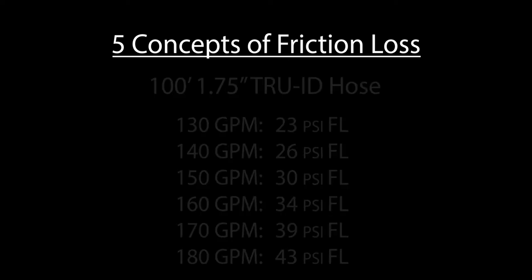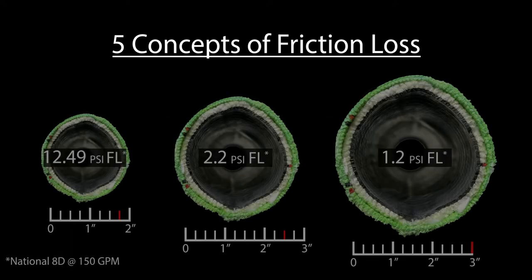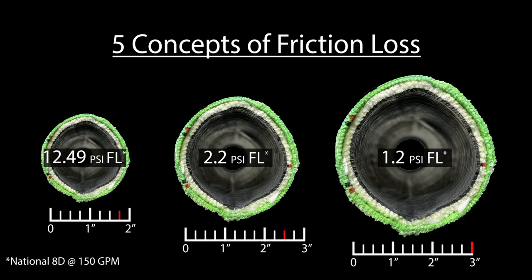Third states that as the diameter of the hose line is increased, the friction loss will decrease drastically. A greater diameter means more space for the water to move, which reduces turbulence in the line.